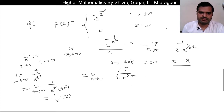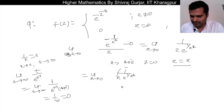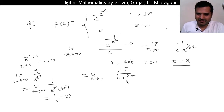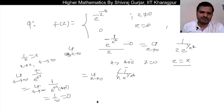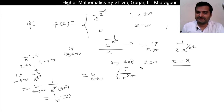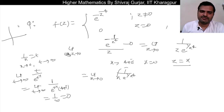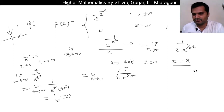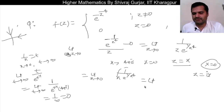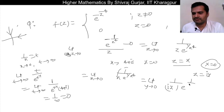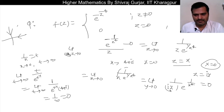So the limit along the x-axis is 0. Now along the y-direction, z = iy, and we check: limit y→0 of 1/(iy · e^(1/(iy)⁴)). Since ι⁴ = 1, we get e^(1/y⁴) in the exponent, so this gives the same limit as before, which is also 0. So along both the x and y directions, the limit is 0.